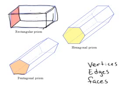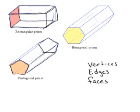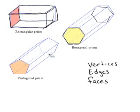With the pentagonal prism, two of them are pentagons and the rest of them are rectangles. For the hexagonal prism, two of them are hexagons and the rest of them are rectangles.